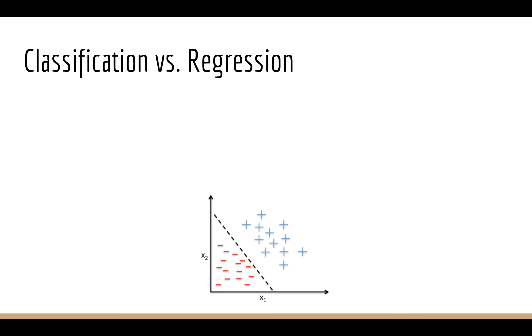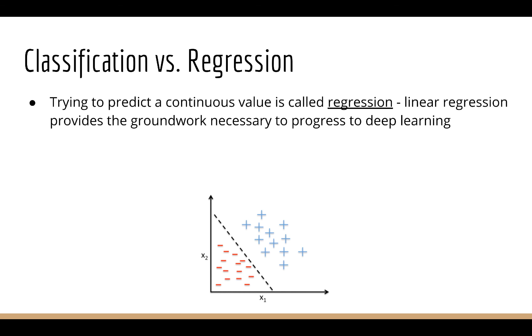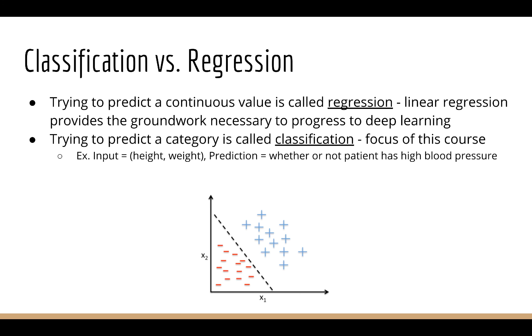So this problem of trying to predict a continuous value is called regression. In the past we've studied linear regression because it provides the groundwork necessary to move on to deep learning. We also have the problem of classification, which is what we'll focus on mostly in this course. For classification we're trying to predict a category. For example, given a person's height and weight we can try to predict whether or not they have high blood pressure. In the past we used logistic regression for this task.